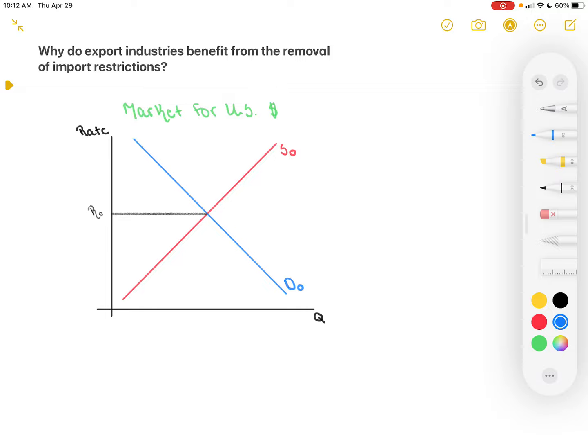If we are removing these import restrictions, that means that the United States is going to be importing more products, meaning we're going to be demanding these foreign currencies. So the demand for US dollars is going to decrease as a result.